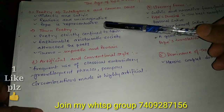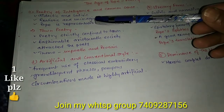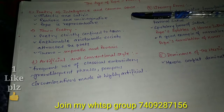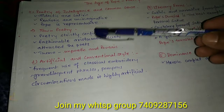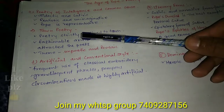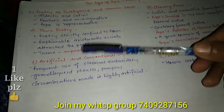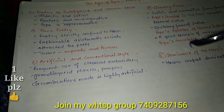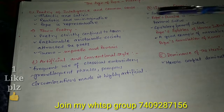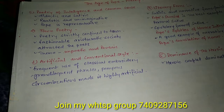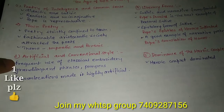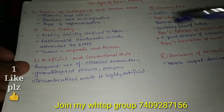So let's talk about the characteristics. The first characteristic is poetry of intelligence and common sense. The second is town poetry. The third is artificial and conventional style. Then some literary forms we will be talking about, and finally the dominance of the heroic couplet, which was used extensively.